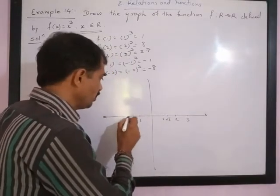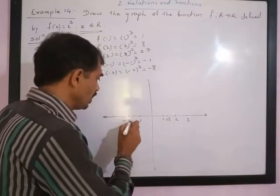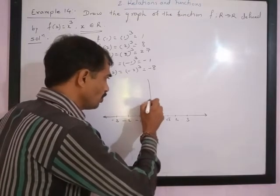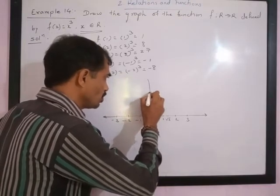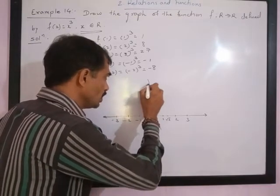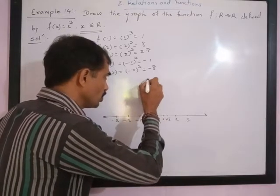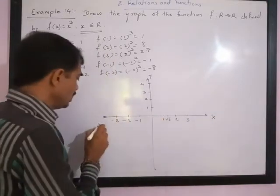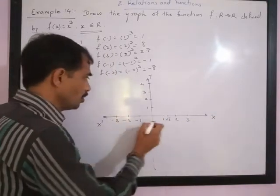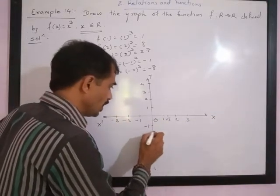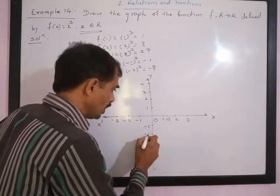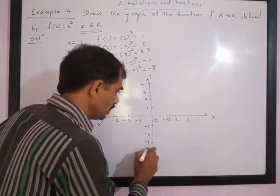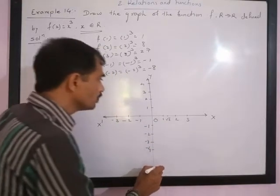On the left side of the origin we have negative 1, negative 2, negative 3; on the right side, positive 1, positive 2, positive 3, positive 4. This is the y-axis and this is the x-axis. On the y-axis: negative 1, negative 2, negative 3, negative 4, and so on.